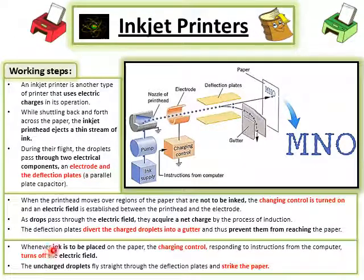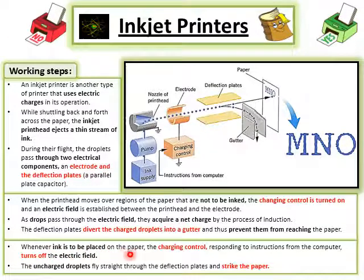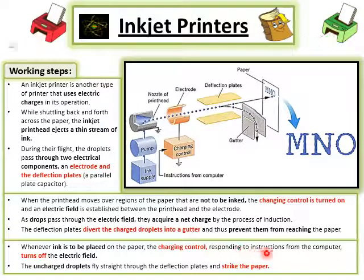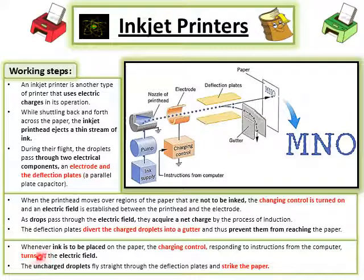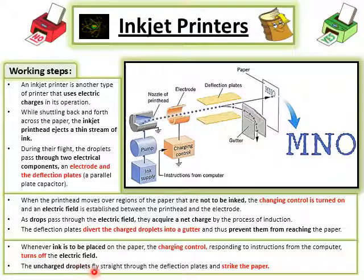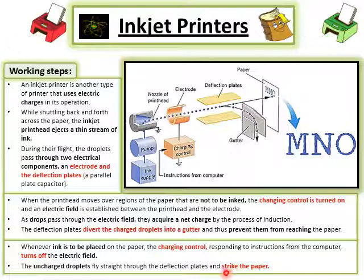Whenever the inkjet printer is to place ink on the paper, the charging control — responding to instructions from the computer — turns off the electric field. The uncharged droplets fly straight through the deflection plates and strike the paper.